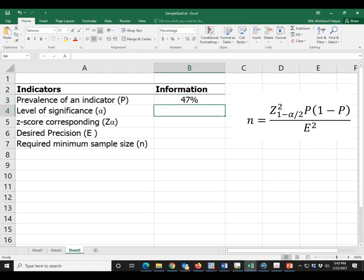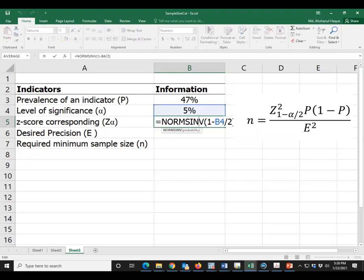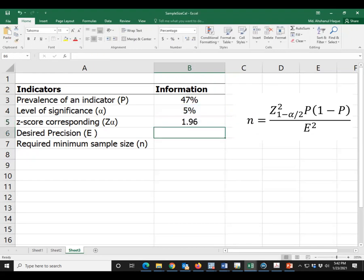Let us suppose prevalence of malnutrition is 47 percent from national survey or other source. Consider level of significance is 5 percent. This is the formula of calculating Z value.